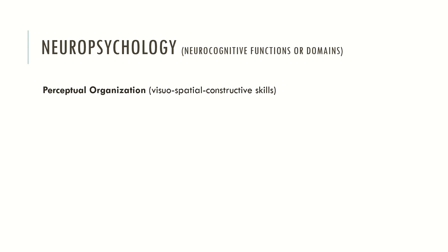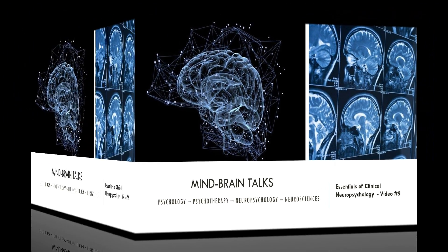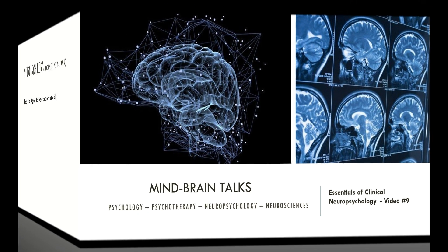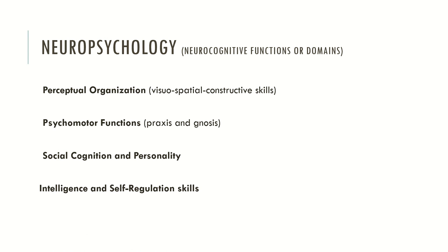Perceptual organization is also a hot topic in clinical neuropsychology because it has a lot of impact in everyday life. Imagine if you can't describe and differentiate the distance between your hand and other objects — this is a kind of deficit that individuals who have suffered traumatic brain injury or strokes may experience if the cortical connection responsible for perceptual organization is impaired. Also assessed are psychomotor functions such as praxis and gnosis, access to knowledge, social cognition and personality, intelligence and self-reflection skills, and dysfunctional behavior and symptomatology driven by impaired brain functions.